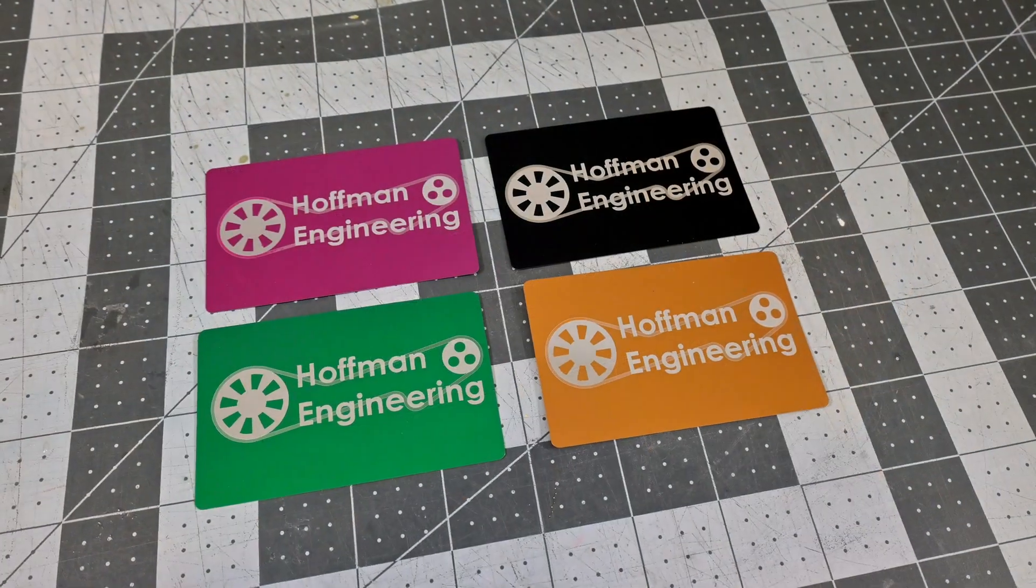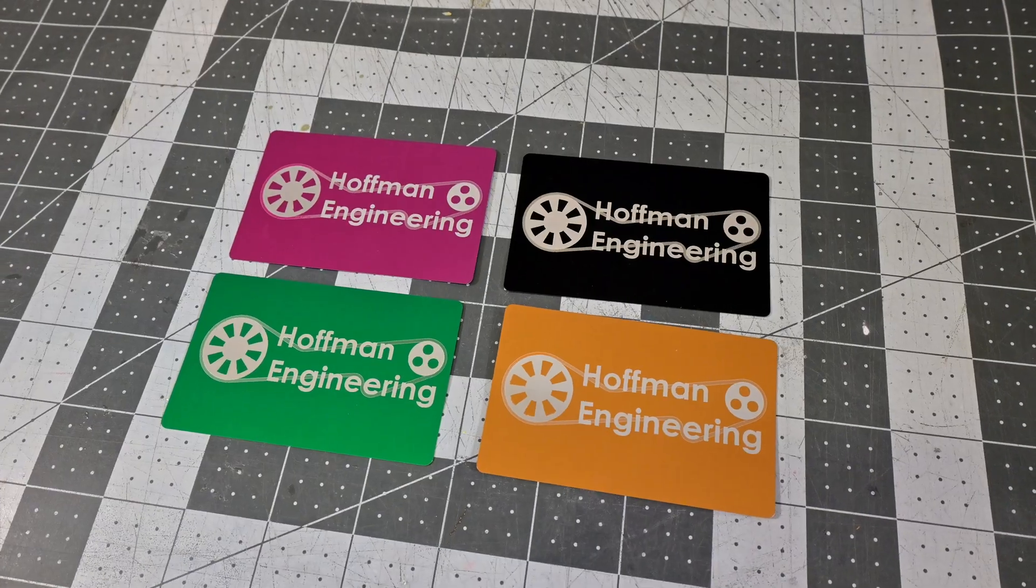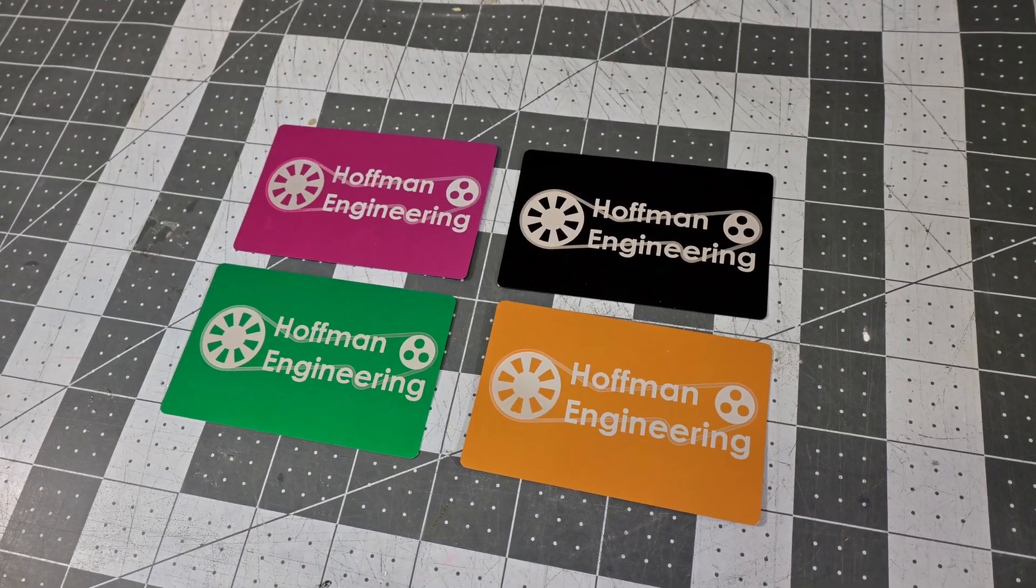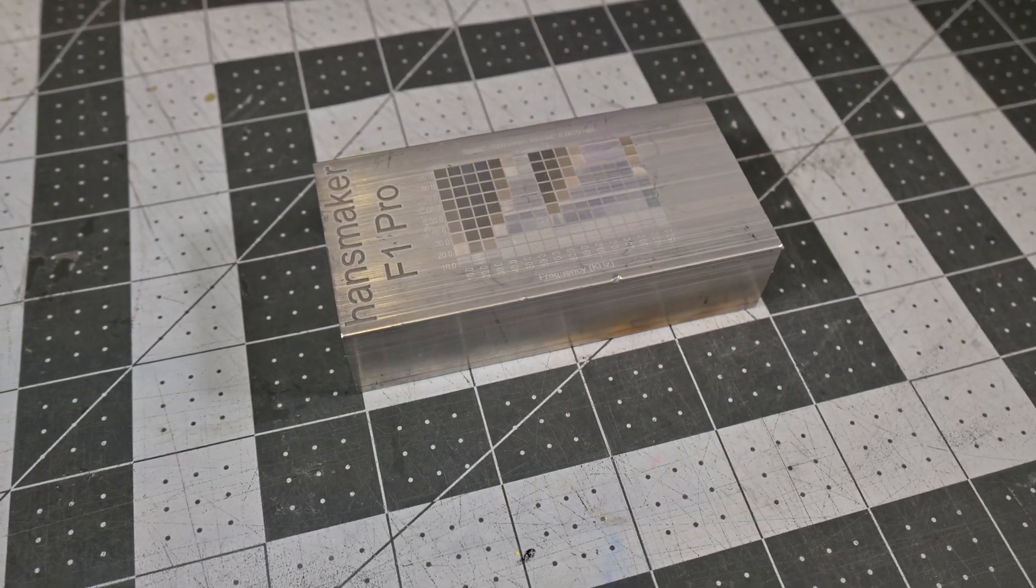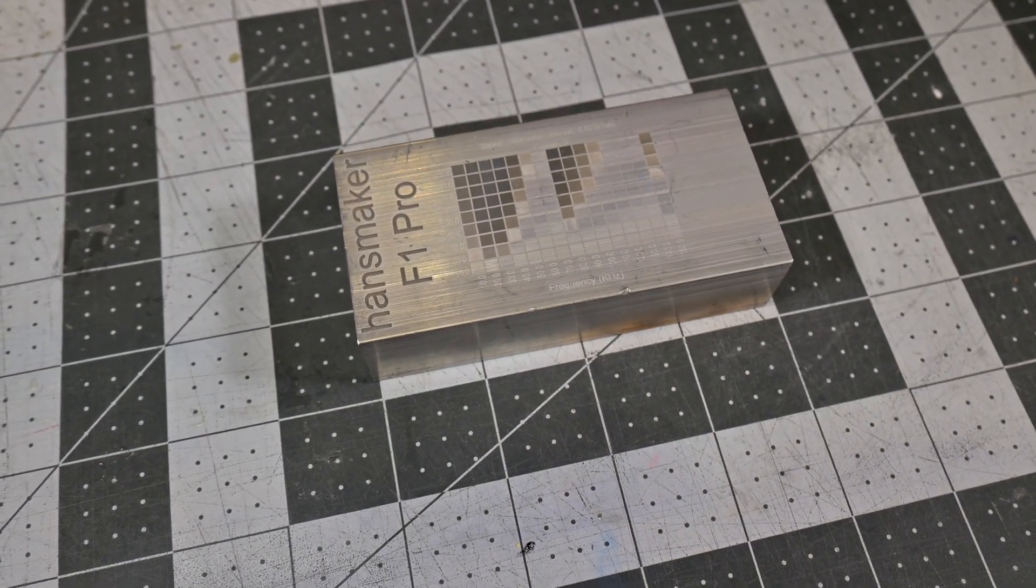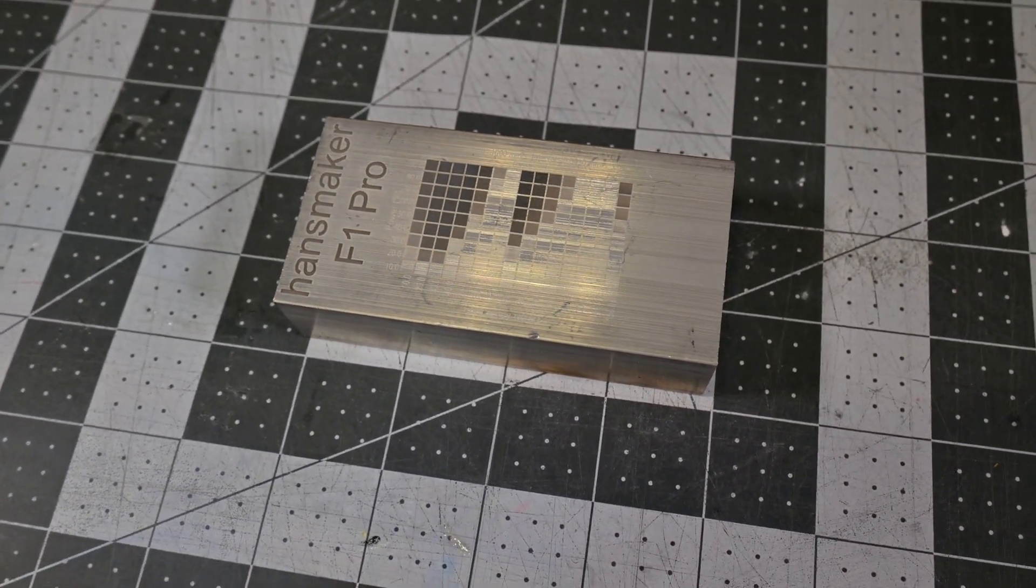Metals are the F1 Pro's specialty. Coated aluminum cards are quick to engrave, and the F1 Pro worked well on all of the different colors of coated aluminum that I tested. I love these business cards. The F1 Pro can also engrave directly onto bare aluminum. You can get some dark engravings onto aluminum. And by engraving multiple passes, I was able to get some pretty good deep engravings on this block of aluminum.